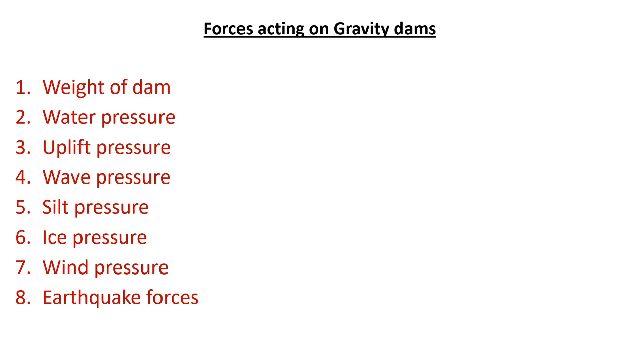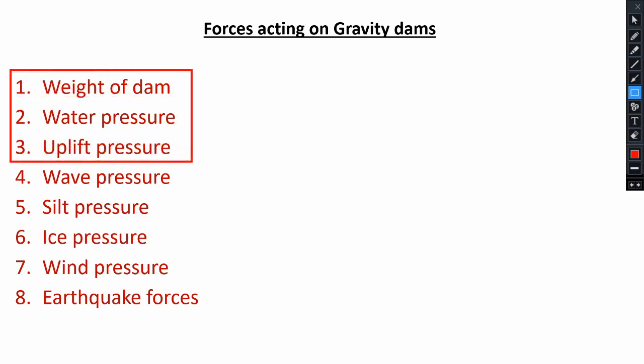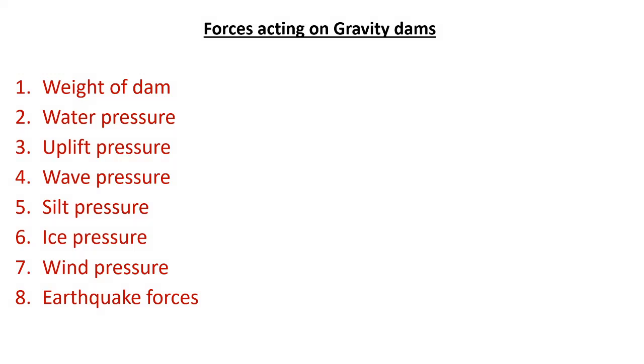Now we are moving to a very important portion of Gravity Dam: the forces acting on Gravity Dams. There are 8 different types of forces acting on a Gravity Dam. But for stability analysis, in the exam point of view, we will concentrate on the first 3 kinds of forces acting on Gravity Dams: weight of the dam, water pressure, and uplift pressure. Other types of forces are wave pressure, silt pressure, ice pressure, wind pressure, and earthquake forces.